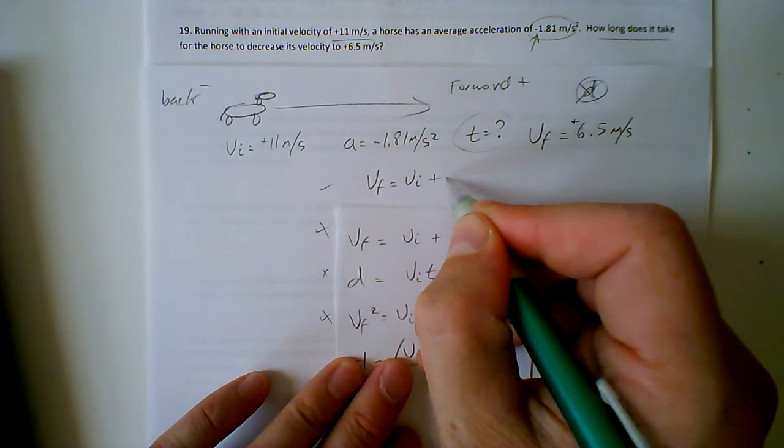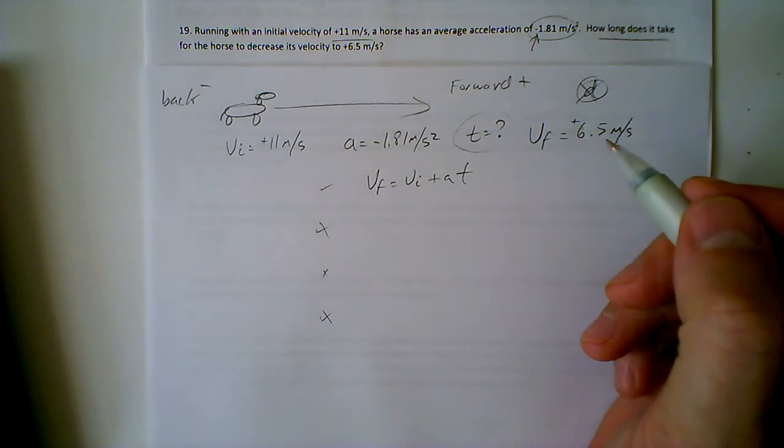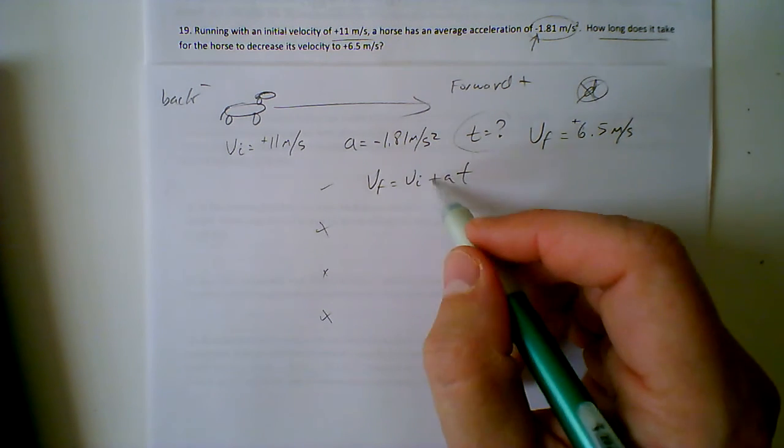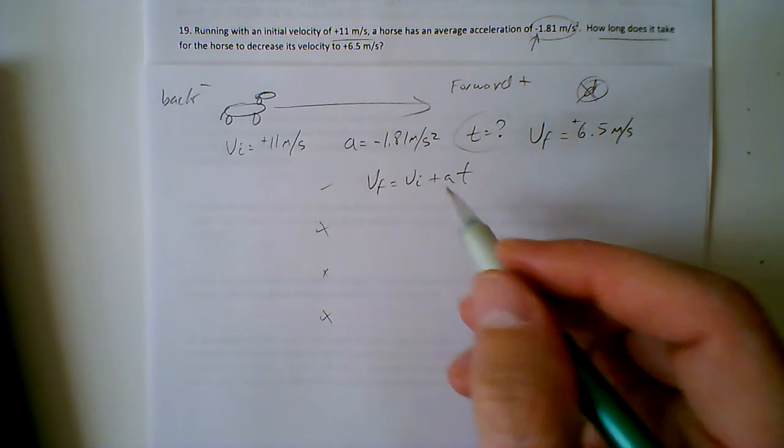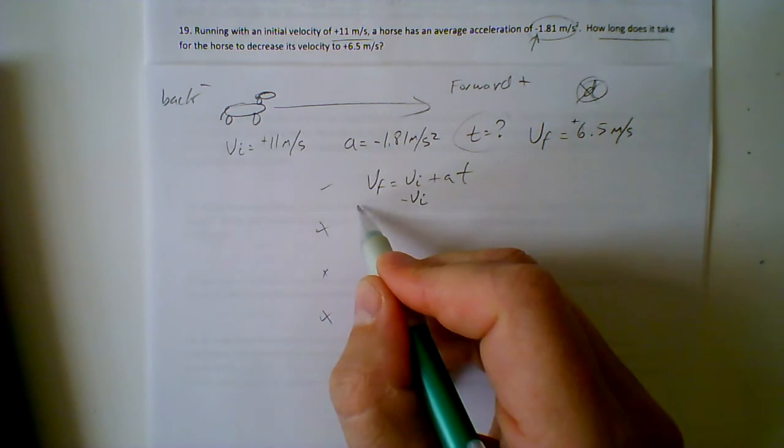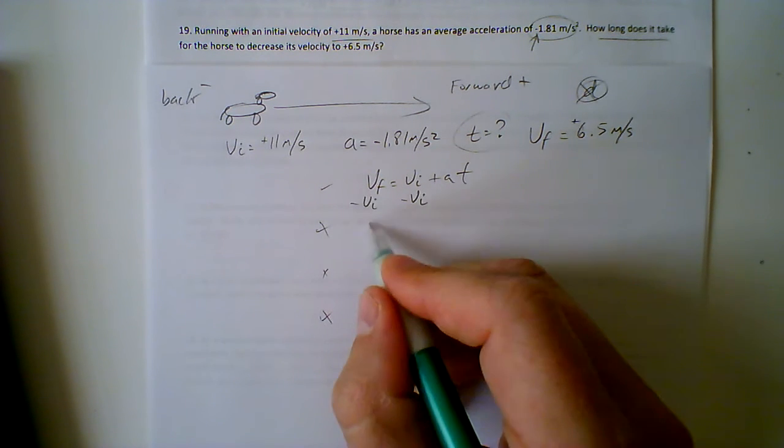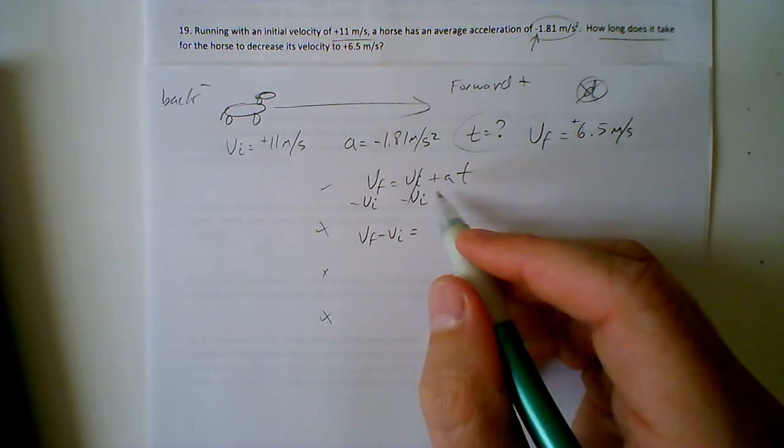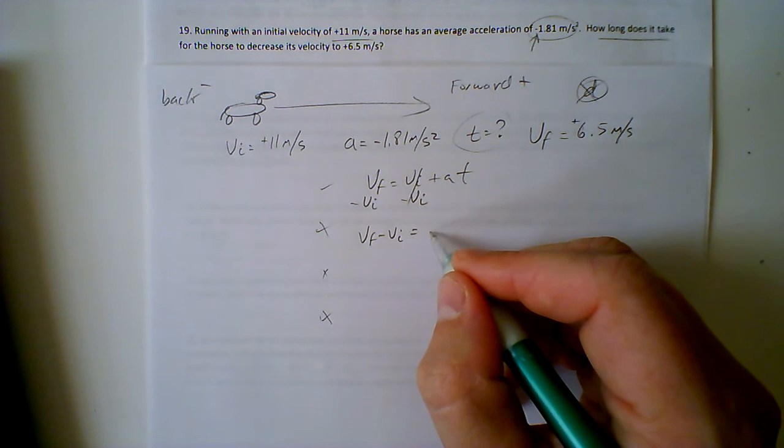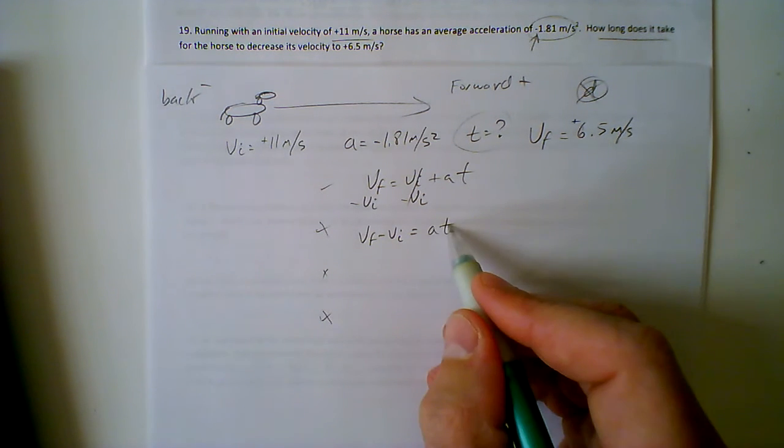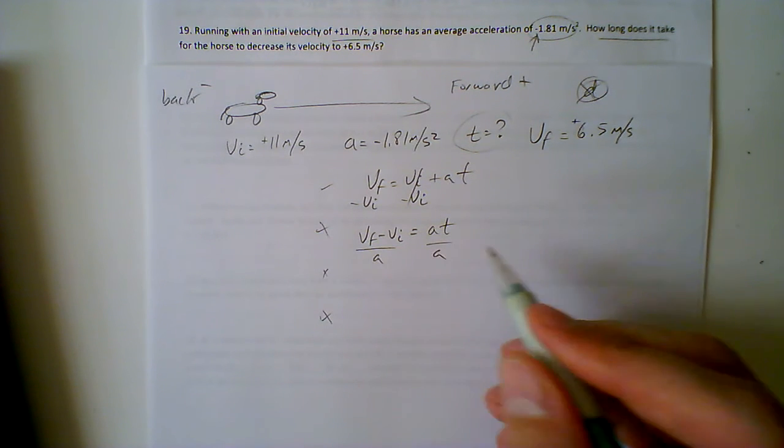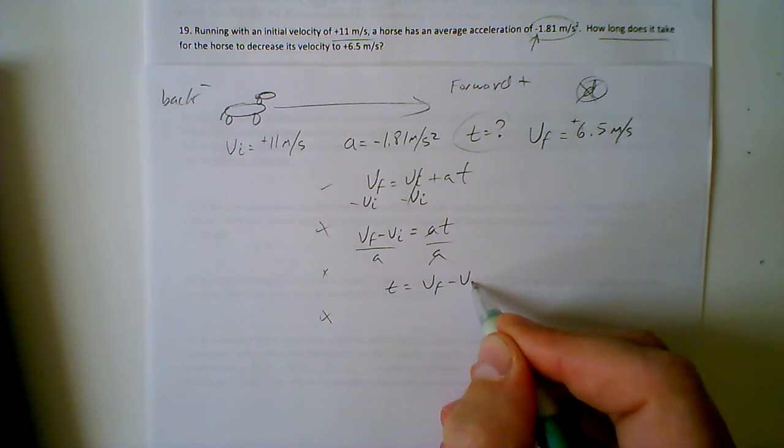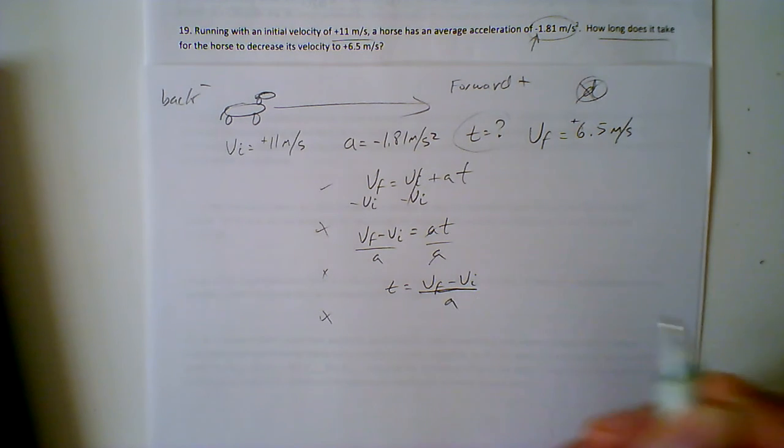Now we're going to do a little rearranging to get t alone. We have to break away anything added or subtracted before we can deal with the multiplication here. So subtract vi, subtract vi. So we get vf minus vi equals, these cancel out, at. Solving for t, we're going to divide both sides by a, divide both sides by a. Left off with t equals vf minus vi over a.